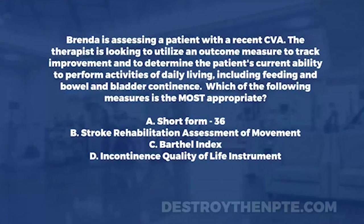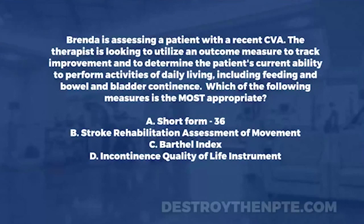We have A, the Short Form 36. B, the Stroke Rehabilitation Assessment of Movement. C is the Barthel Index. And D is the Incontinence Quality of Life Instrument.